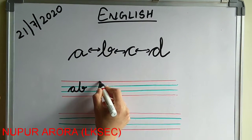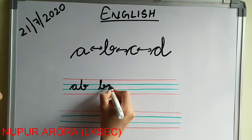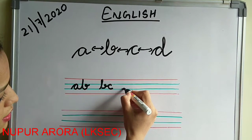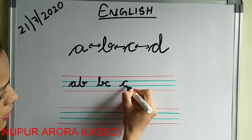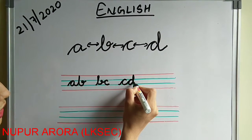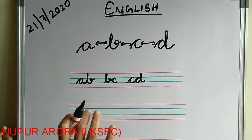B to C, like this. C to D. Very slowly, slowly you will do. You will practice it very slowly.